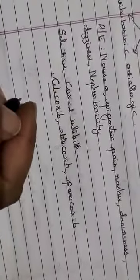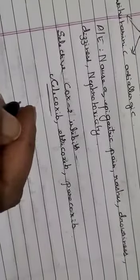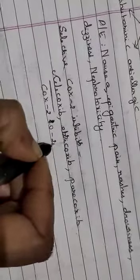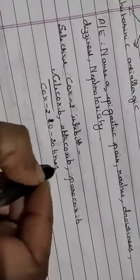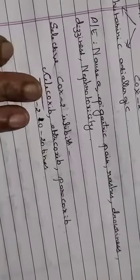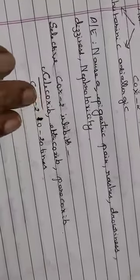Because it inhibits only COX-2, this drug also does not have an antiplatelet effect. Celecoxib is the most commonly used drug. It inhibits the COX enzyme 10 to 20 times more than aspirin. It has analgesic, antipyretic, and anti-inflammatory effects.